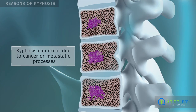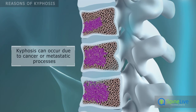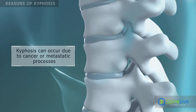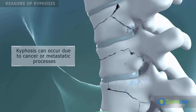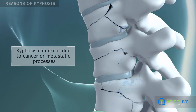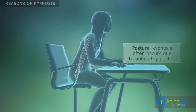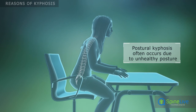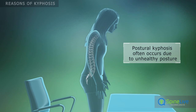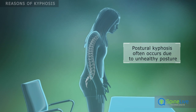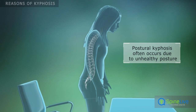Cancer or metastatic processes in the vertebrae can cause severe deformities that may result in kyphosis. Postural kyphosis most commonly occurs in teenagers due to unhealthy sitting positions.